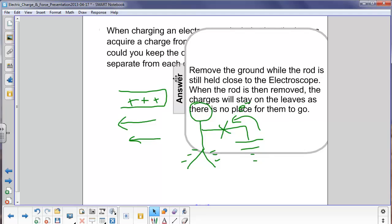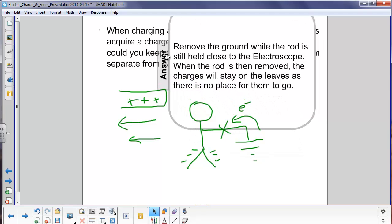So here's what we have: remove the ground while the rod is still held close to the electroscope. When the rod is removed, the charges will stay on the leaves, as there's no place for them to go, and the leaves will stay separate.